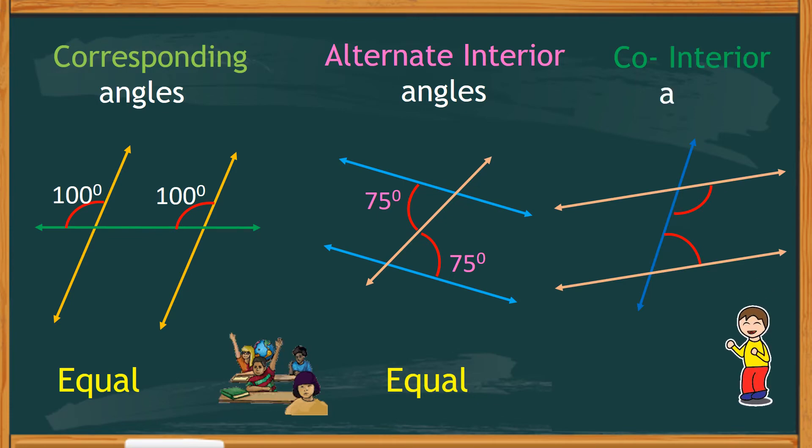However, co-interior angles are not equal, but together, they add up to 180 degrees. It means that if one is 70 degrees, then the other is 110 degrees.